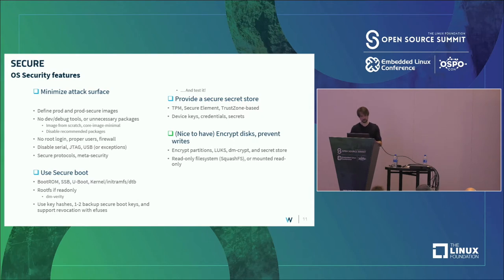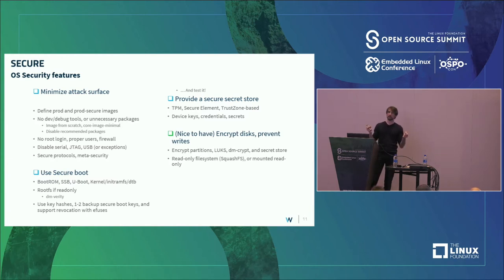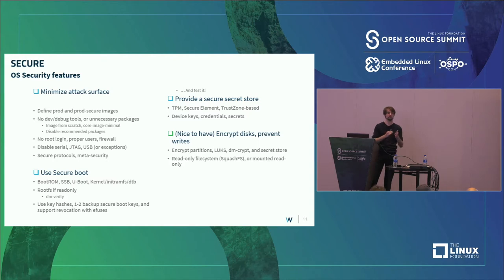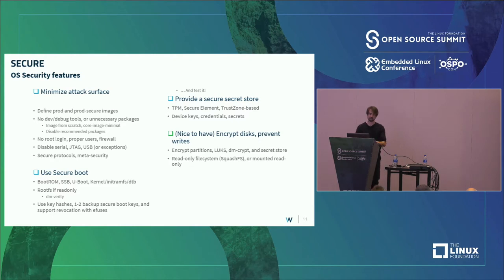Additionally, make sure to disable all your interfaces — that also applies to USB. If you have a USB port and USB enabled within your kernel, that's just a door open for anything to be inserted. A lot of things can be inserted in a USB port, and usually you don't want that. Either disable USB completely for the production image, or just authorize specific USB devices, and use secure protocols like HTTPS.